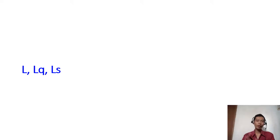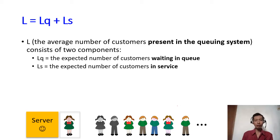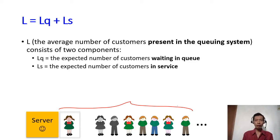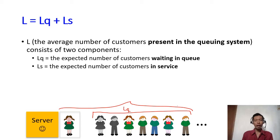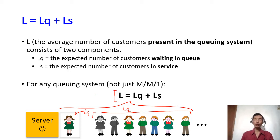Other than L, we also have LQ and LS. The L we've seen so far refers to the number of customers present in the entire queuing system — in the illustration, L is about all the people. We can break this down into two parts: people still waiting in the queue, who are related to LQ, and the one already in service, related to LS. We have the relation L equals LQ plus LS, and this applies to all queuing systems.